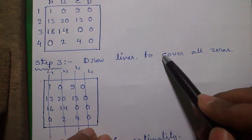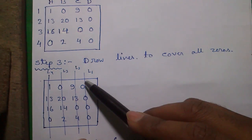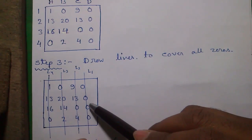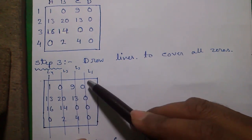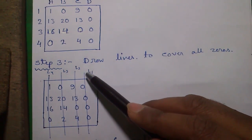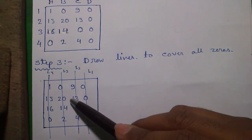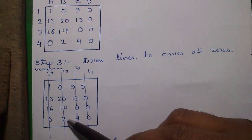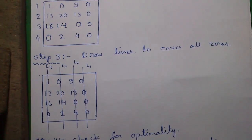Step 3. Draw lines to cover all the zeros. Here is a simple rule. The first line must be drawn in that row or that column which has maximum number of zeros. So we have 4 zeros in column 4. So we will draw our first line L1 in column 4. And then go to the decreasing order of number of zeros. So L2, L3, and L4. Our objective is to cover maximum number of zeros with minimum number of lines.